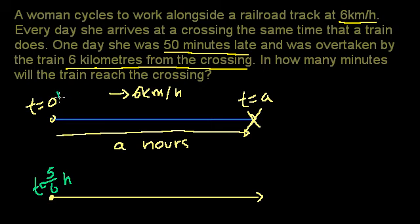It says she was overtaken by the train 6 kilometers from the crossing. So she was overtaken by the train someplace over here. And this distance right here, this is where the crossing is. This is 6 kilometers.